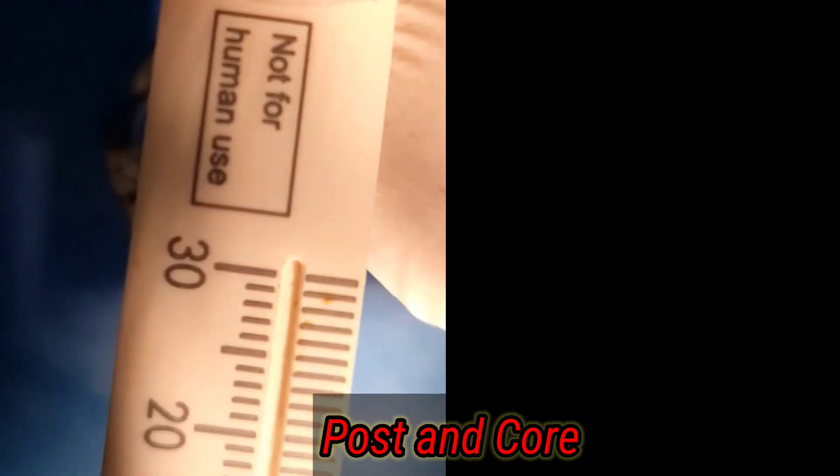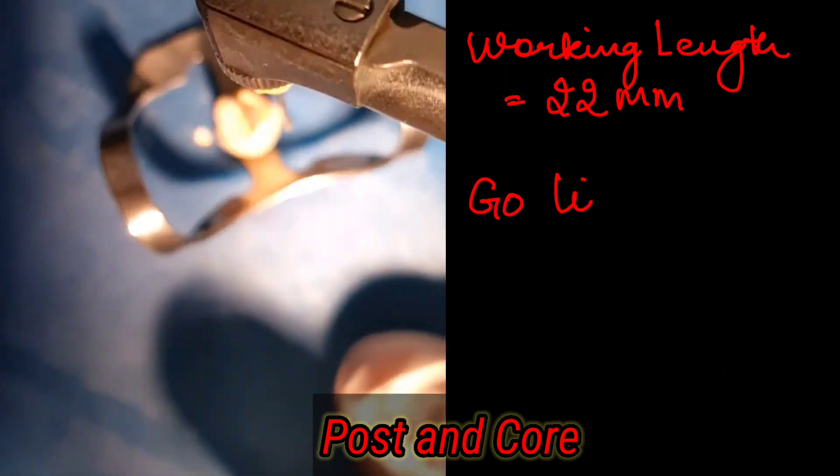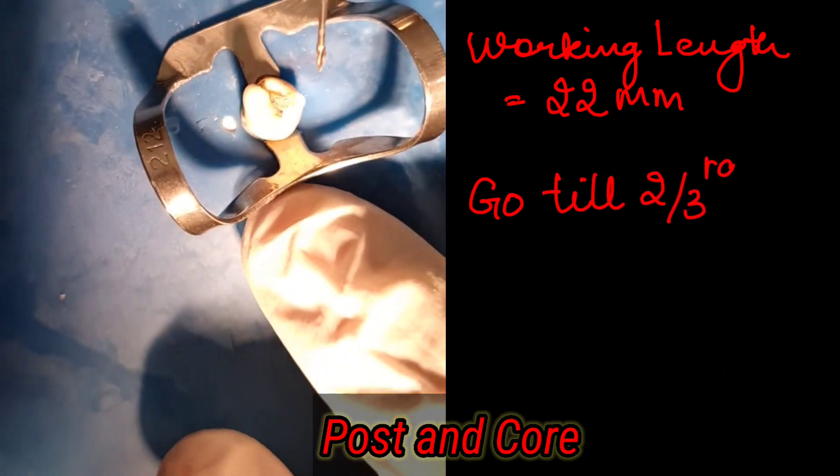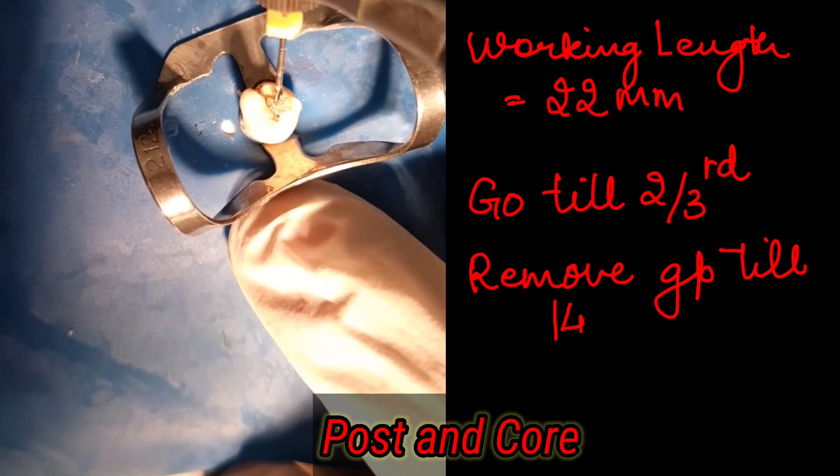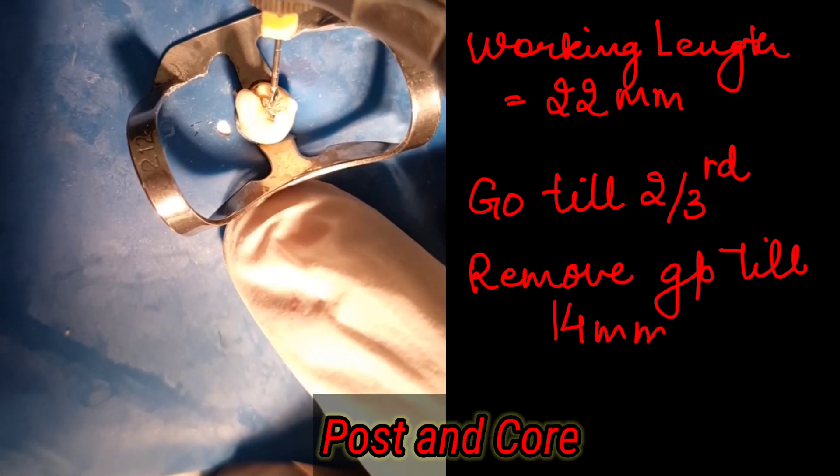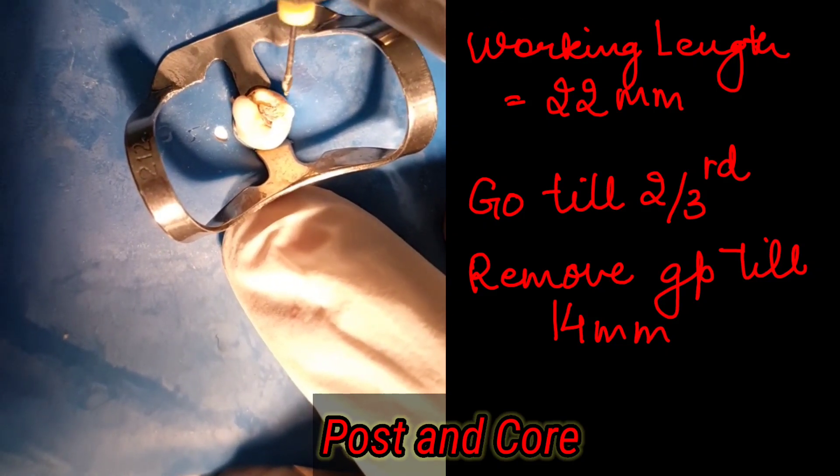In this case we have a working length of 22 millimeters, so we go up till 14 millimeters—that is two-thirds. We remove the gutta-percha. Here we are taking the drill and we remove up to 14 millimeters of the gutta-percha and we leave four to five millimeters of the gutta-percha at least as a barrier.